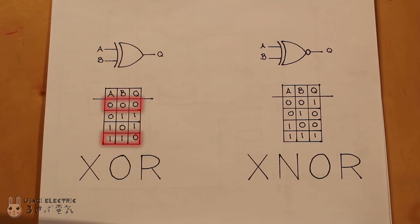If both inputs are high or low, then the output is low. An exclusive NOR gate is simply an exclusive OR gate that's been inverted.